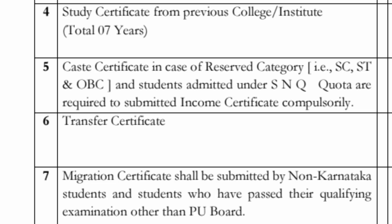Next is the study certificate. Karnataka domicile is proved through the study certificate. Students should have studied a minimum of 7 years in Karnataka to claim the KEA Karnataka domicile.